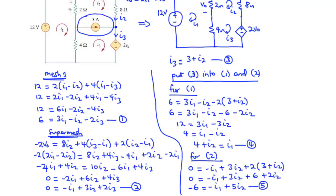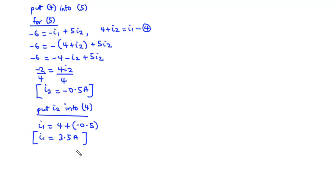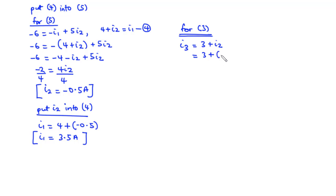Going back to Equation 3: I3 = 3 + I2 = 3 + (−0.5) = 2.5 amperes.